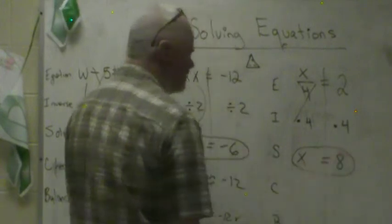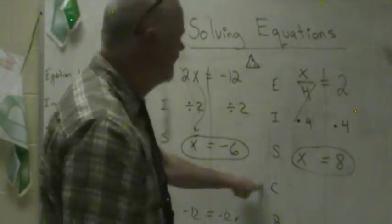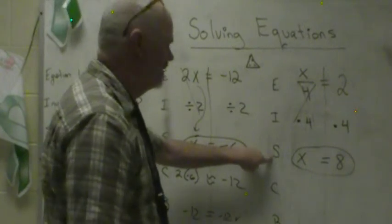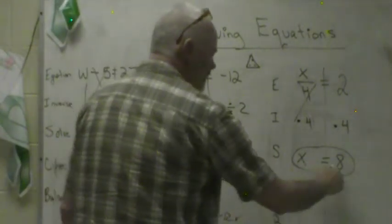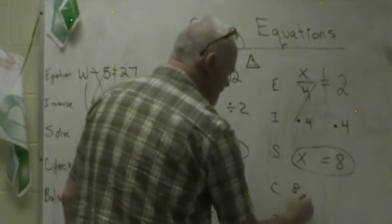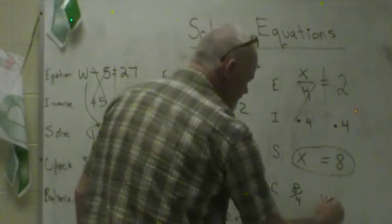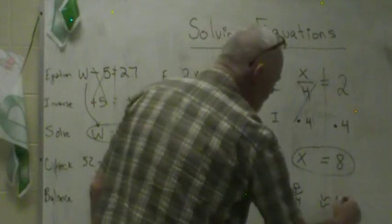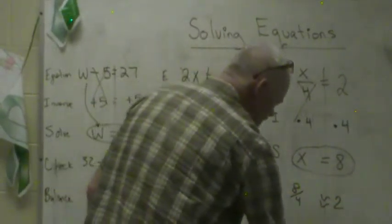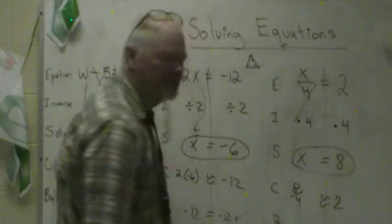I think that's our answer. We're going to find out because we can check it. Equation, inverse, this is our answer, solution. All we've got to do is put it wherever we had an X. Put the 8. 8 divided by 4 is supposed to equal 2. Well, 8 divided by 4 is 2. 2 equals 2. It balances.